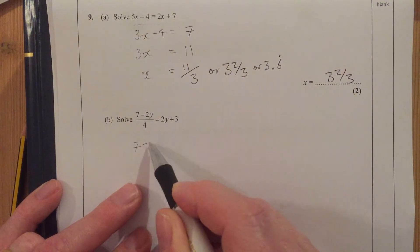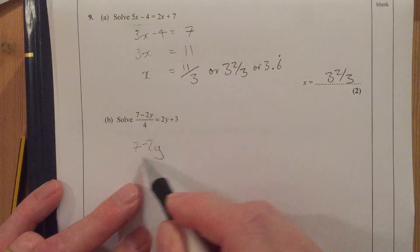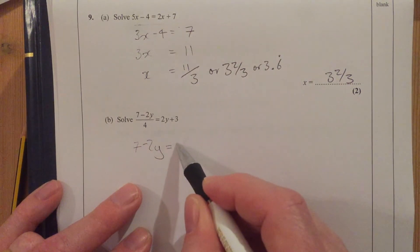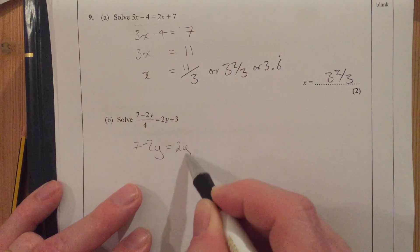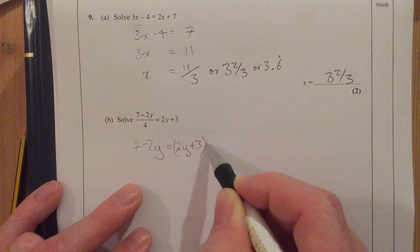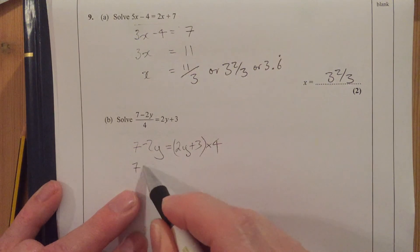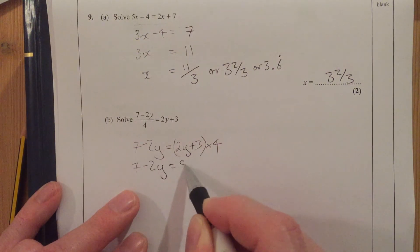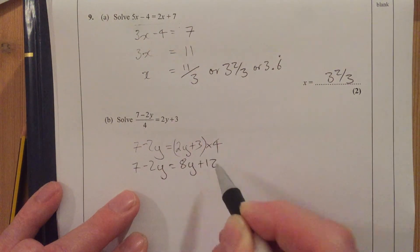So 7 minus 2y, times all of this side by 4, that just goes. Then we've got to times all of this side by 4. So let's just multiply that out: equals 8y plus 12. Then it becomes like a question above.